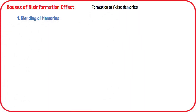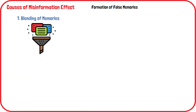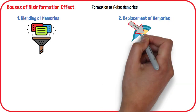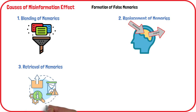Blending of memories: one explanation is that the original information and the misleading information presented after the fact get blended together in the person's memory. Replacement of memories: another possibility is that the misleading information actually overwrites the original memory of the event. Retrieval of memories: researchers have also suggested that since the misleading information is more recent in memory, it tends to be easier to retrieve.